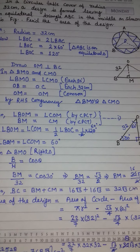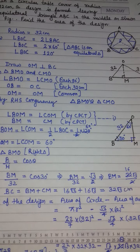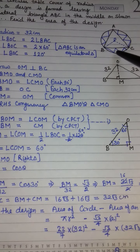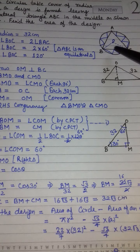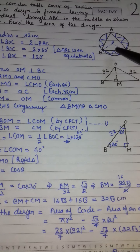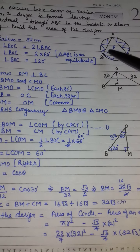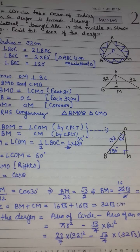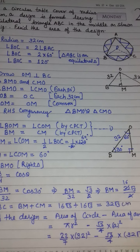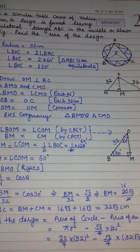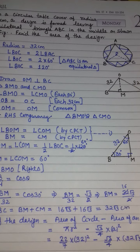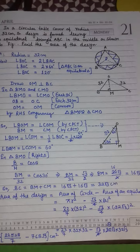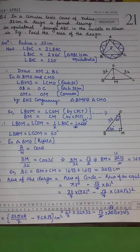यह design का area है। Second method यह है कि minor segment का area find करें — तीन segment बन रहे हैं तो 3 से multiply करें। उसमें θ = 120° लेना पड़ेगा। लेकिन note करें: government ने इस chapter के θ = 120° वाले सभी questions delete कर दिए हैं। I hope आपको यह video अच्छी लगी। अगर लगी तो like जरूर करें।